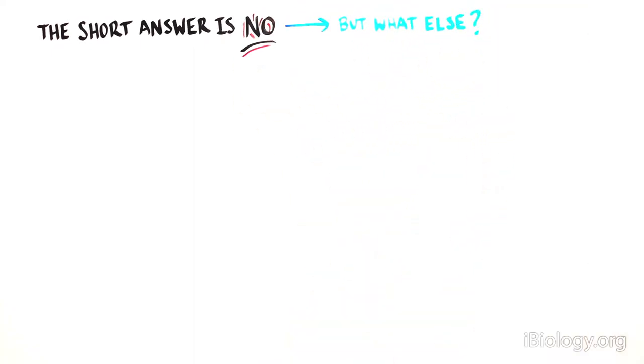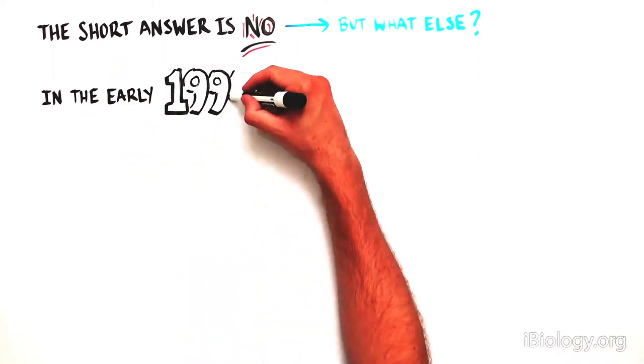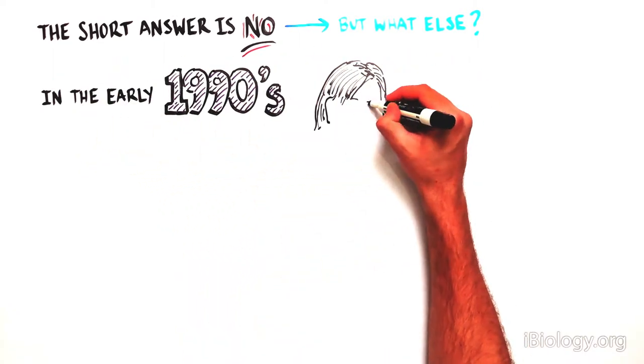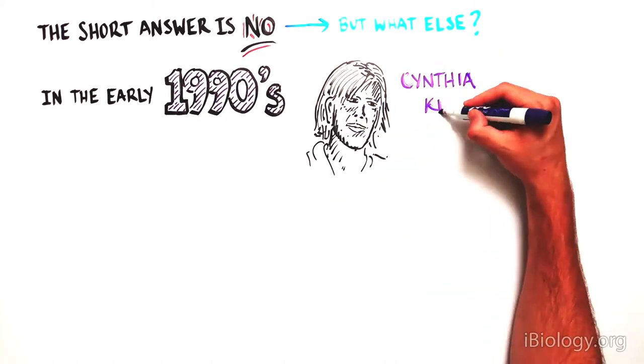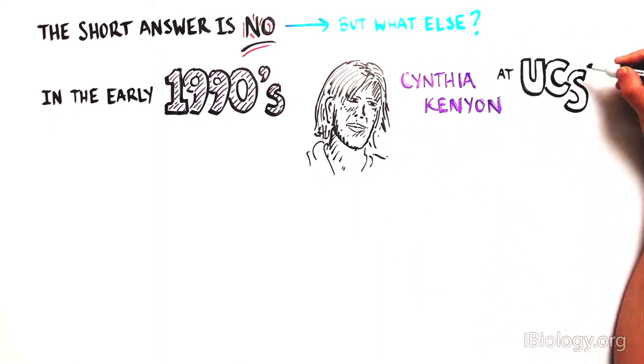Then what else could be contributing? In the early 1990s, the idea that aging could be in our genes was hard to imagine, but Cynthia Kenyon from the University of California in San Francisco thought it may be possible.